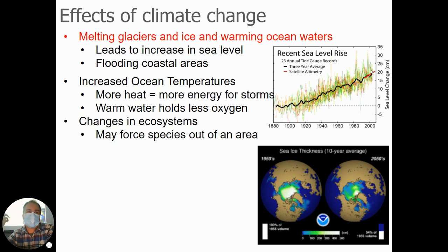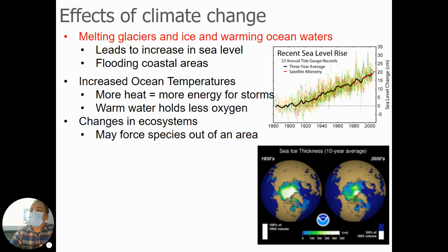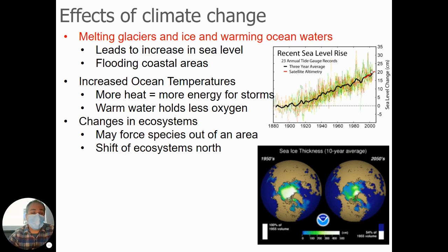If a small country reduces the amount of carbon dioxide it's putting in the atmosphere, all the other countries have to do the same in order to make a significant change, because carbon dioxide spreads throughout the whole globe — it doesn't stay above one country. What one country does affects every other country, so it takes cooperation between different countries to have a positive effect. There are efforts for countries to come to agreements — like the Paris Treaty, which happened about five or six years ago — where countries come together and try to agree on how to limit carbon dioxide emissions.